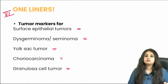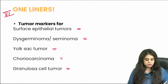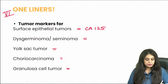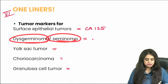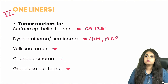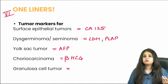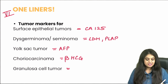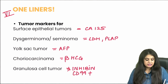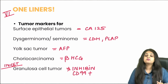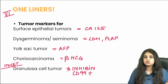Question six covers tumor markers starting with ovarian tumors. For surface epithelial tumors it is CA125. For dysgerminoma (ovary) and seminoma (testis) it is LDH and PLAP — this has appeared as a match-the-following question. For yolk sac tumor it is alpha-fetoprotein; for choriocarcinoma it is beta-HCG. For granulosa cell tumor it is inhibin and CD99 positivity — this was a recent INI CET question, expected in upcoming FMGE and NEET-PG.